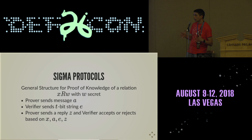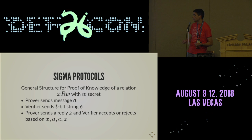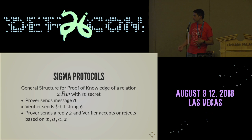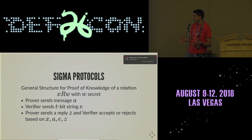There are a number of these proofs where you want to show that you know something about a public value without revealing that information. It follows the general structure of: the prover sends some message A, the verifier sends back some string E, and then the prover sends a Z value and the verifier will either accept or reject the proof based on the values of X, A, E, and Z.